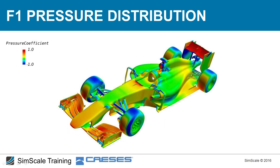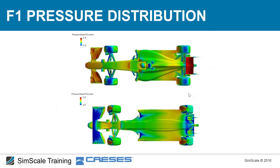We can see stagnation pressure at the driver's helmet and front cockpit glass. Looking at the side pod: the flow is accelerated as much as possible here to create a low-pressure region — visible as a blue spot in the CFD — which acts as suction pulling the car downward.